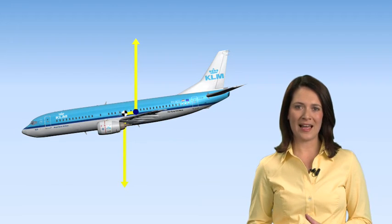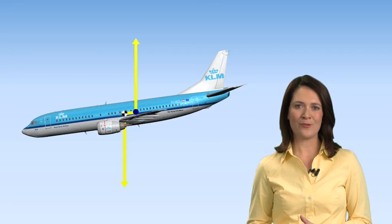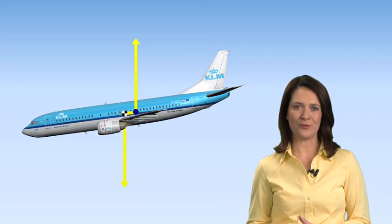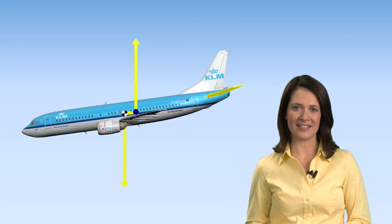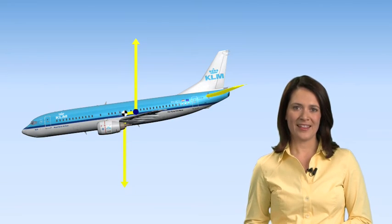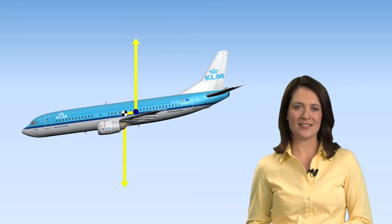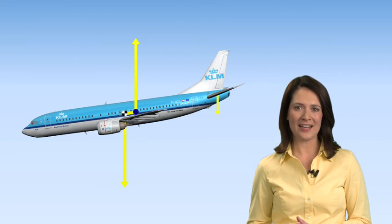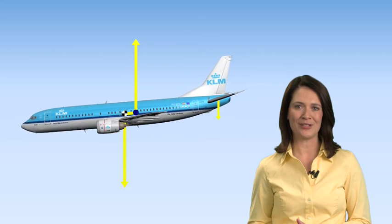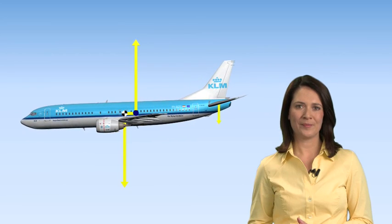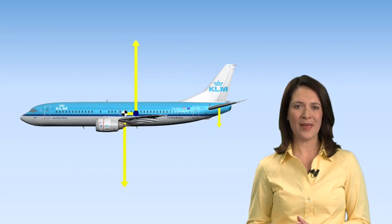With this inherent imbalance, we need to provide an extra force to keep the fuselage level. This is the job of the horizontal stabiliser. The stabiliser's angle of incidence is adjusted to provide a downforce which exactly counterbalances the nose-down pitching moments. Balance is restored, but at the expense of extra drag.